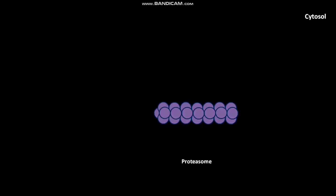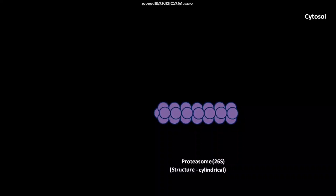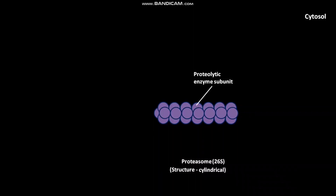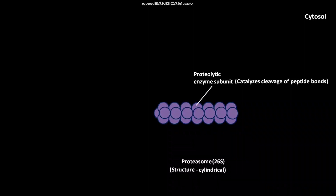In the cytosol of eukaryotic cells, proteasomes are present. The structure of a proteasome is like a cylinder. These proteasomes are 26S in nature. The proteasome has proteolytic enzyme subunits, which catalyze the cleavage of peptide bonds.